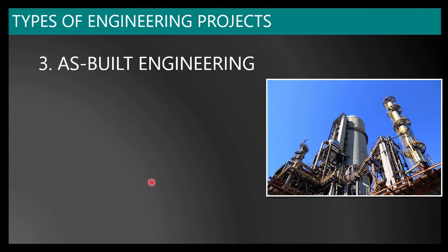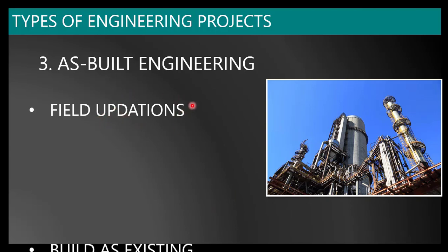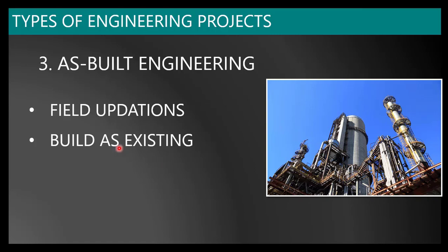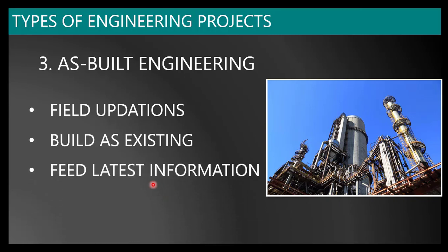The third type is as-built engineering. As-built engineering means updating the site condition into your existing 3D model or existing drawings. We need to update exactly the as-is site condition in the 3D model and drawings — all items available on site are recorded in the model and drawings. It is a reflection of the existing site condition, capturing the latest information as per site conditions, because there are lots of modifications going on in the site that may not have been updated. As-built engineering is to capture the actual field condition, and these are the three important types of engineering predominantly followed in process plant development.